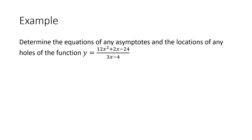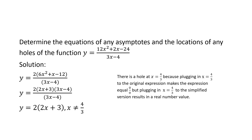Here's a good example: let's determine the equation of any asymptotes and locations of any holes of this rational function. We begin by factoring a 2 out of the numerator and then trinomial factoring. After we do that, we can cross out the 3x minus 4 factors. We know from restrictions in rational expressions that x can't equal 4 thirds. Since 3x minus 4 was a factor of the denominator but is no longer present after crossing out, that tells us there's a hole at x equals 4 thirds.